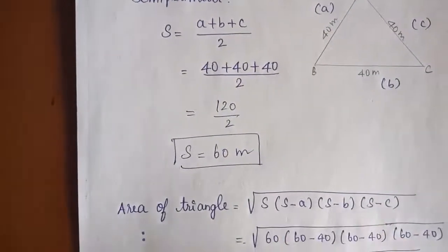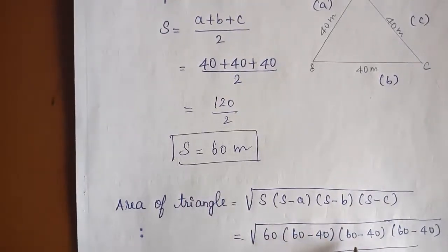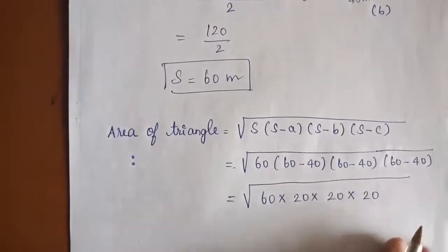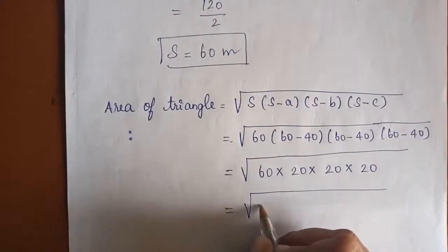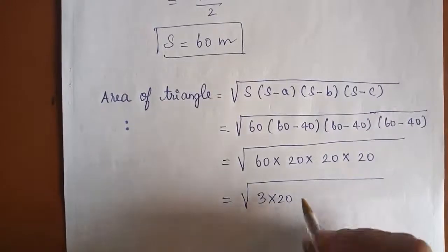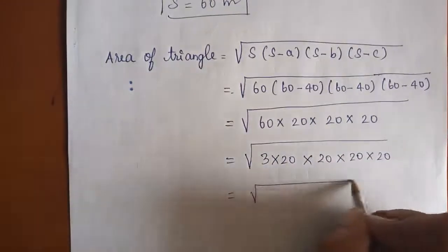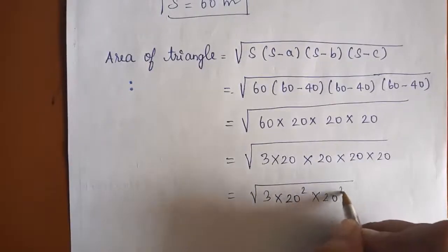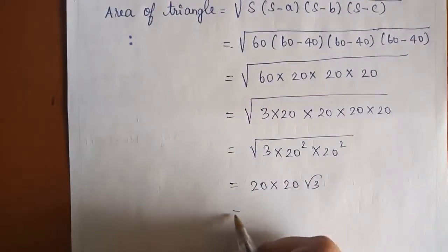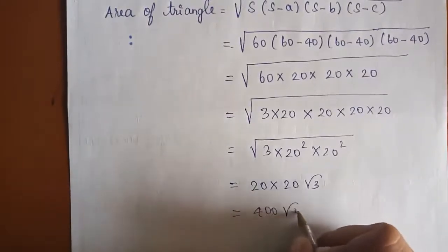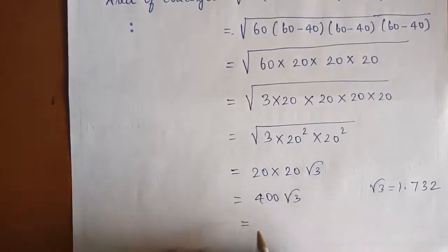Area = root of 60 × (60−40) × (60−40) × (60−40) = root of 60 × 20 × 20 × 20. Splitting 60 as 3 × 20: root of 3 × 20 × 20 × 20 × 20 = root of 20² × 20² × 3 = 20 × 20 × √3 = 400√3. Using √3 = 1.732, the area is 400 × 1.732 = 692.8 square metres.